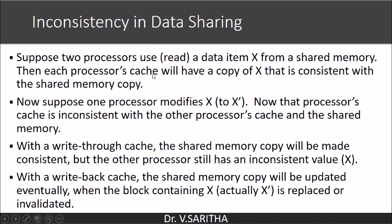Let us say there are two processors using data item x from a shared memory. Each processor's local cache will have a copy of x. At this point both copies are consistent with the shared memory copy. Now assume that one processor modifies the value of x to x'. At this point, the other processor and shared memory are inconsistent with the processor that updated the value of x to x'.